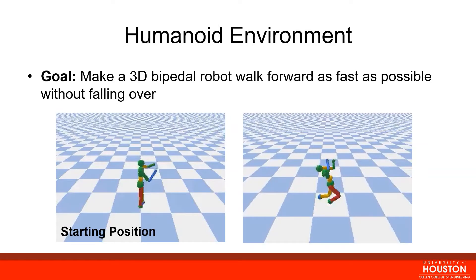The final environment is the humanoid environment, in which we evaluated all of our algorithms. The goal is to make a 3D bipedal robot walk forward as fast as possible without falling over. The robot gains a larger reward for walking forward but loses points if it falls down. The robot starts in a standing position and its goal is to learn to stay standing and continue walking forward.